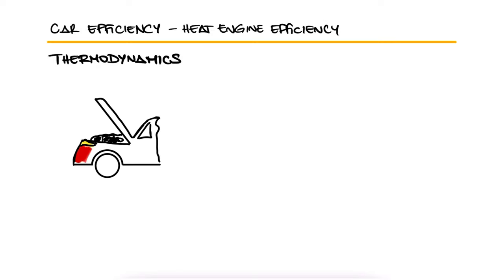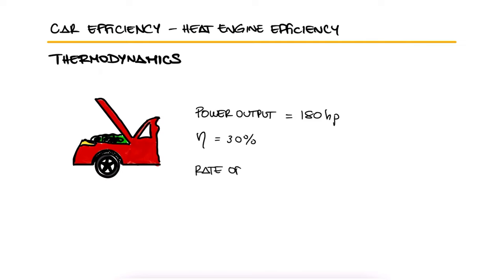A car engine with a power output of 180 horsepower has a thermal efficiency of 30%. Determine the rate of fuel consumption if the heating value of the fuel is 19,500 BTU per pound mass.